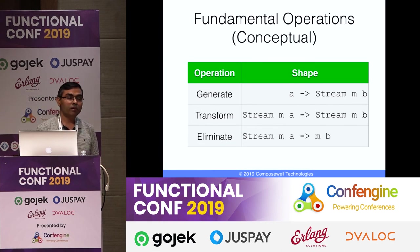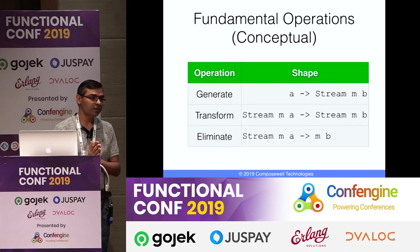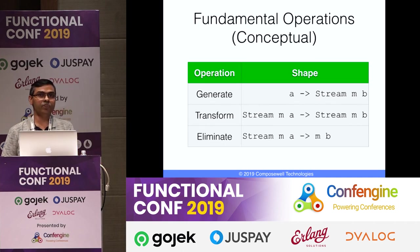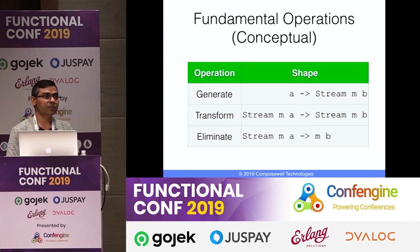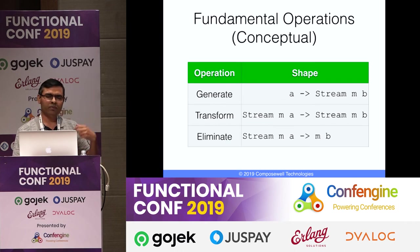There are three fundamental operations in the library. You can categorize all combinators into: generate, transform, and eliminate. Generate means you generate a stream from a non-stream value (a seed). Transform means you transform a sequence to another sequence. Eliminate means you fold a sequence into a single value.